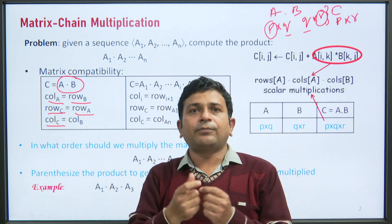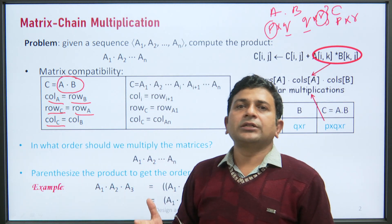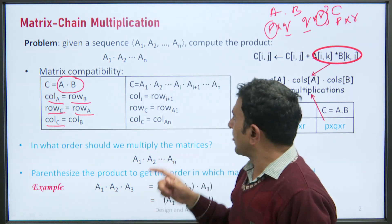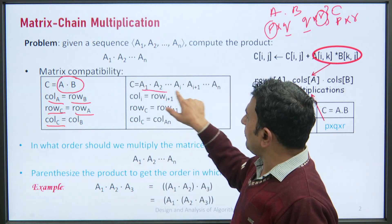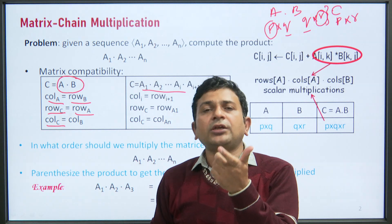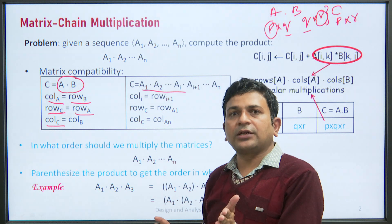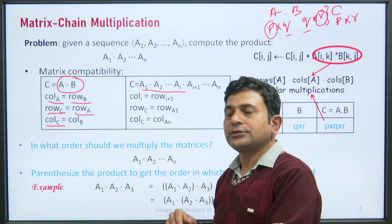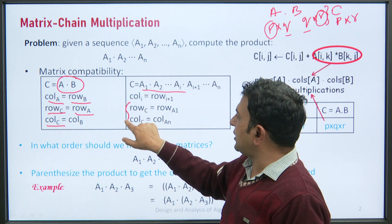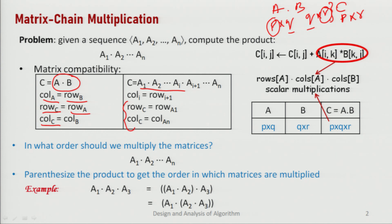Similarly, if we talk about a chain of matrices A1, A2, A3, ..., An, the column of matrix i must be equal to the row of matrix i+1 for any consecutive matrices. The order of the resultant matrix will be the number of rows in the first matrix and the number of columns in the last matrix.